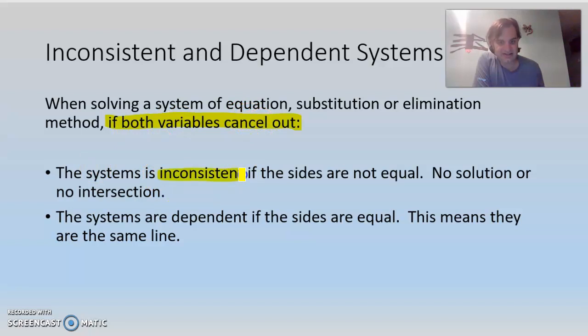But if both variables cancel out, we have an inconsistent system if what's left is not equal. So if your X's and Y's cancel out and you get something like 4 equals 7, that's no solution because 4 can't be 7. But if you get something where it's like 4 equals 4, then that means they're dependent and they're the same line.